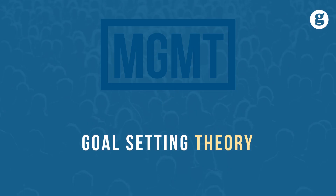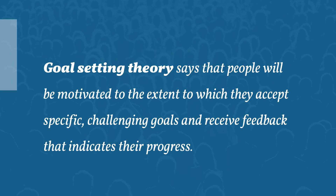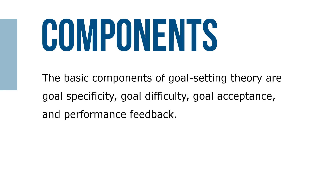A goal is a target, objective, or result that someone tries to accomplish. Goal setting theory says that people will be motivated to the extent to which they accept specific, challenging goals and receive feedback that indicates their progress towards goal achievement. The basic components of goal setting theory are goal specificity, goal difficulty, goal acceptance, and performance feedback.